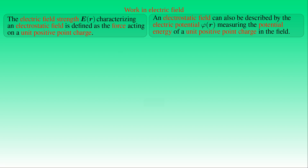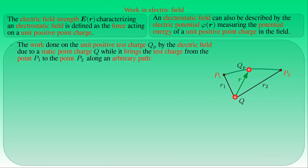We compute the work done on a test charge QP by the electrostatic field E due to the point charge Q, while it brings the test charge QP from point P1 to point P2 along an arbitrary path without acceleration. We can imagine it as an infinitely slow process where acceleration of the test charge can be neglected, so we do not need to account for electromagnetic effects due to accelerating charges which would modify the energy balance equation of the moving charge.